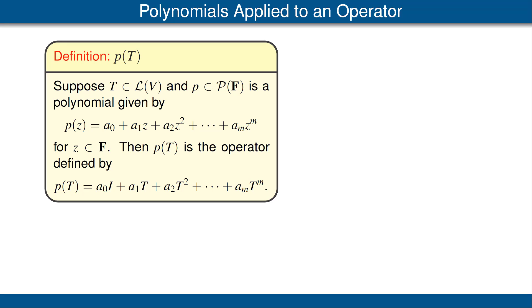Now we need to define what it means to apply a polynomial to an operator. Suppose T is an operator on V and p is a polynomial with coefficients in our scalar field F. If p of z is given by the formula shown here for each number z, then p of T is the operator we obtain by replacing z with T. We also replace the constant term a0 in the polynomial with a0 times I. For example, if p of z equals z cubed, then p of T is the operator T cubed.